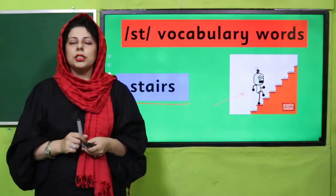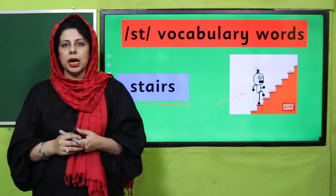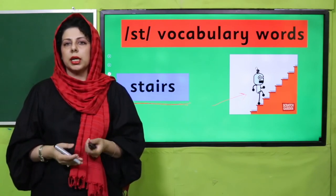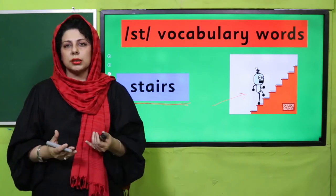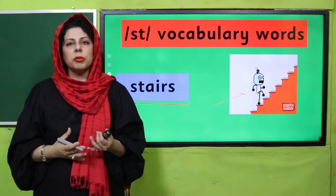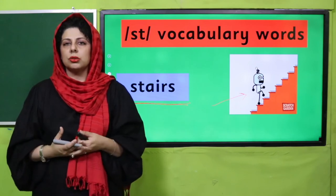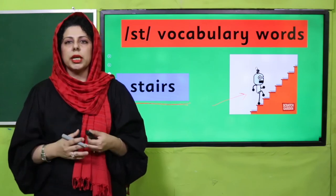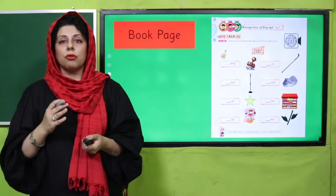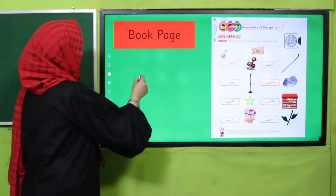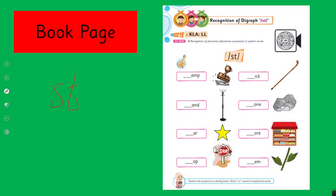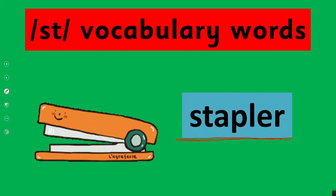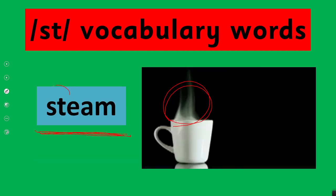Students, can you identify the sound for today? Aaj hum kis sound ki baat kar rahe hain? Teachers, these are consonant clusters. Usually in a diagraph, they are two sounds together, so hum usko us context mein bhi samjha rahe hain. Consonant clusters grade one onwards mein sikhenge, lekin abhi hum jis sound ko focus kar rahe hain, that is the ST sound — st, st. Let's go back again: stairs, stapler, steam.